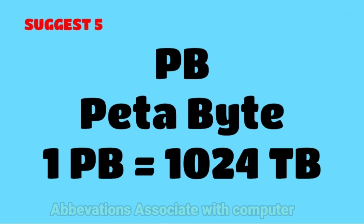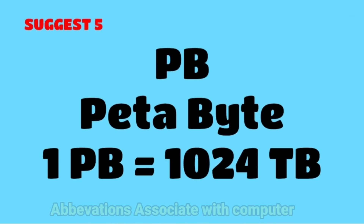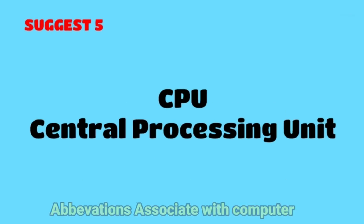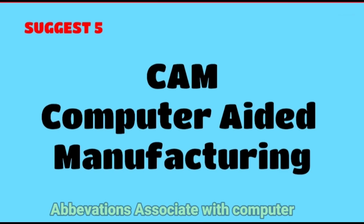The full form of PB is Petabyte; 1 PB equals 1024 TB. The full form of CPU is Central Processing Unit.